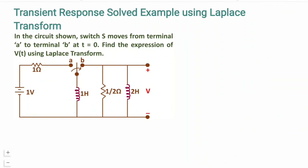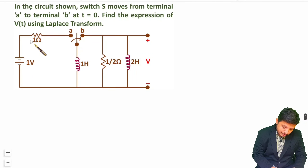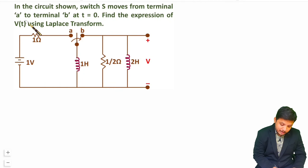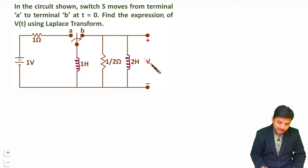Let us see the question first. We are given a circuit in which switch S moves from terminal A to terminal B at t equals 0. This switch is at terminal A when t is less than 0, and after t equals 0 it moves to location B. We are required to find the expression of V(t), the voltage at those two terminals, using Laplace transform.